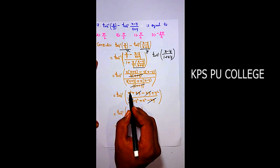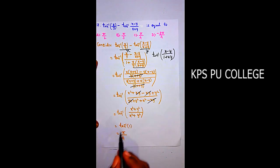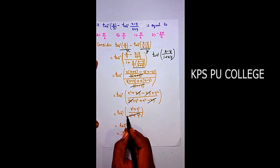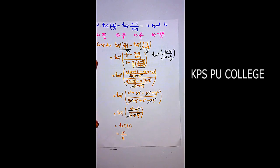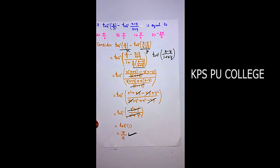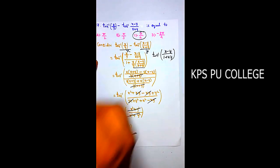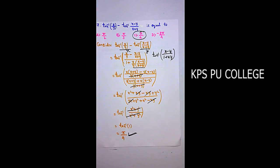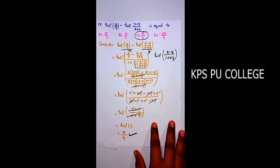After simplification, we get tan⁻¹((x²+y²)/(x²+y²)) = tan⁻¹(1) = π/4. Option C is the right answer. In this class we discussed miscellaneous problems from question 9 to question 17, completing all exercise problems from exercises 2.1, 2.2, and the miscellaneous exercise on inverse trigonometric functions. Thank you everyone.